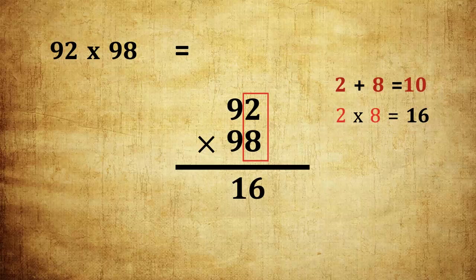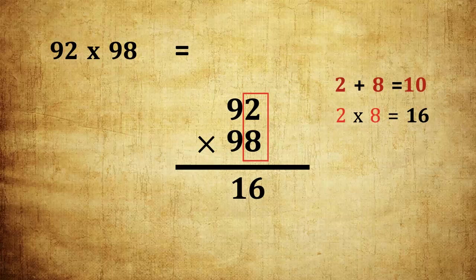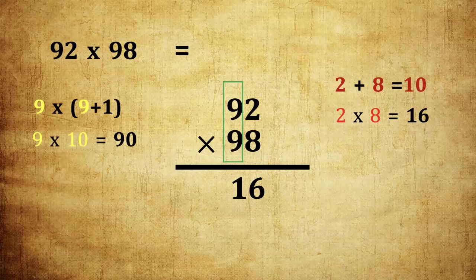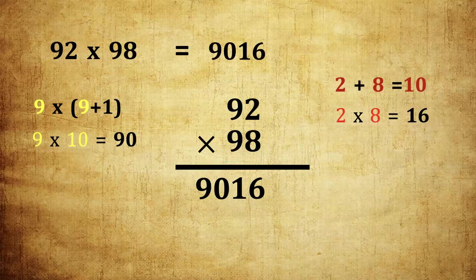2 into 8 is 16. Write 16. Then previous digits are same, 9. 9 into 10, 90. So 92 into 98 is 9016.